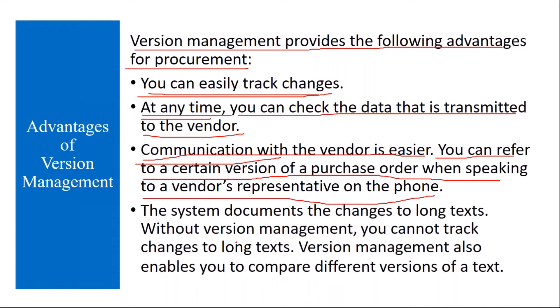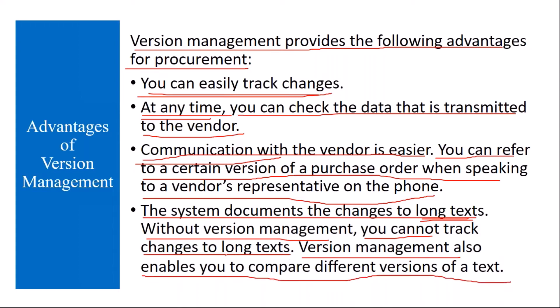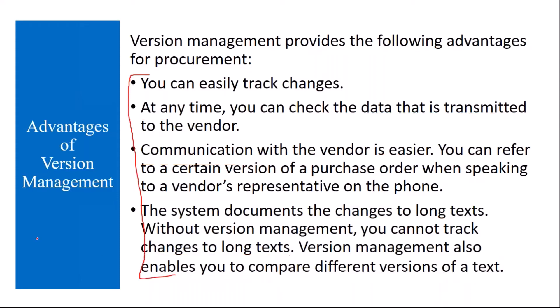For example, you created a purchase order and sent it to the vendor. Before making any changes the vendor has requested, you can refer back to the older version of the data. The system also documents changes to the long text. If you have version management and make changes to the long text, you can track those as well. Without version management, you cannot track changes to the long text. Version management also enables you to compare different versions of the text.